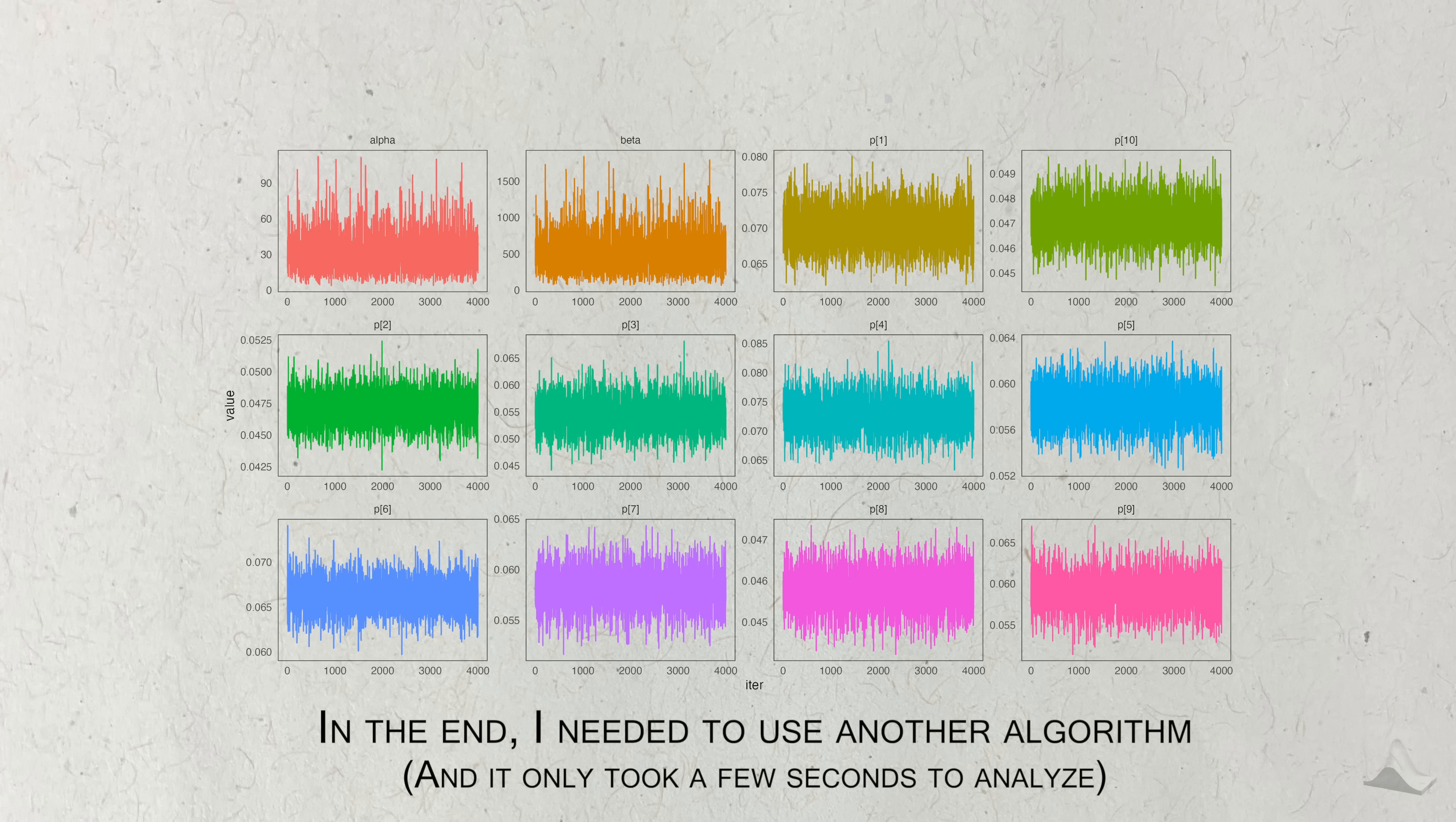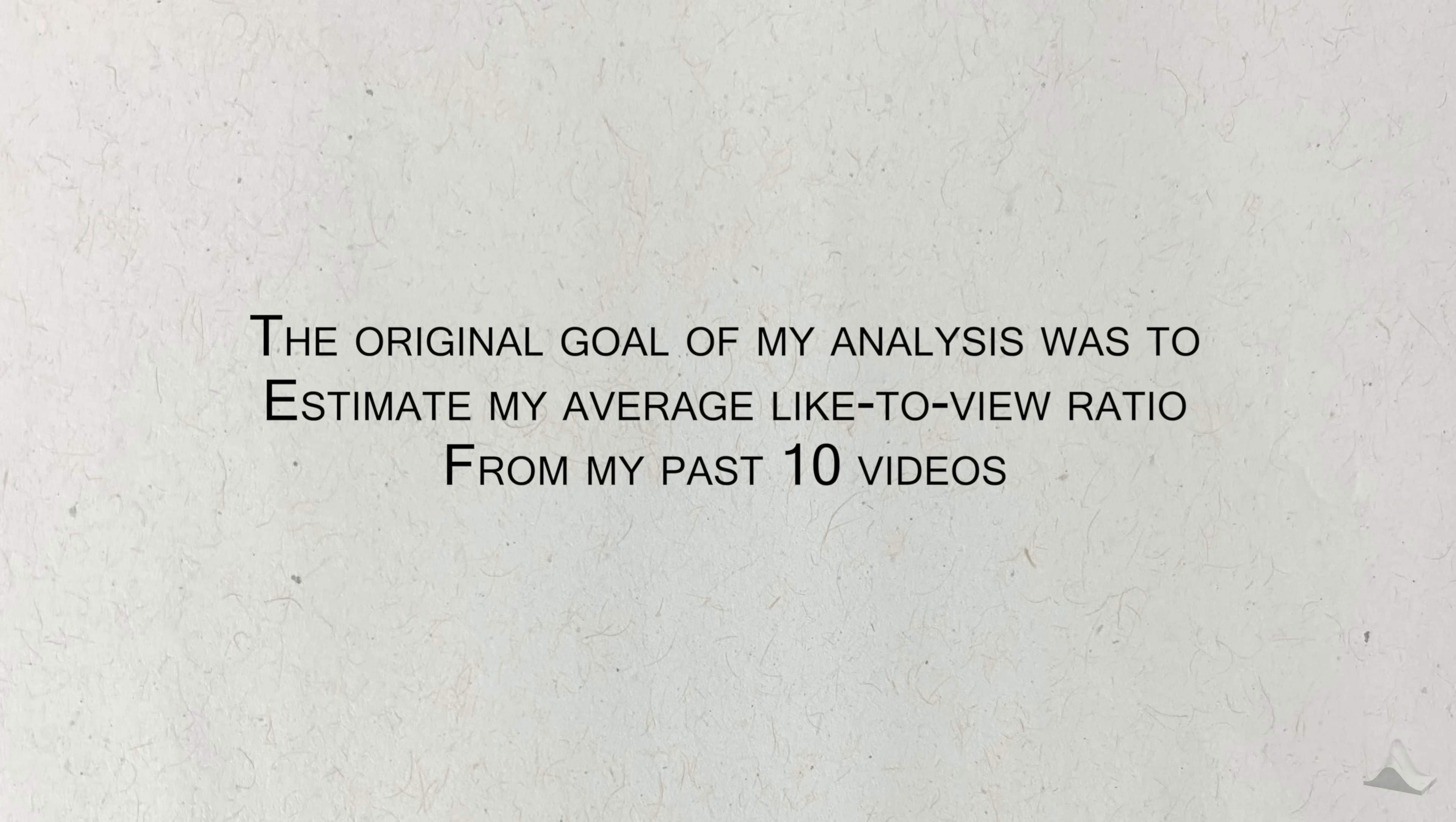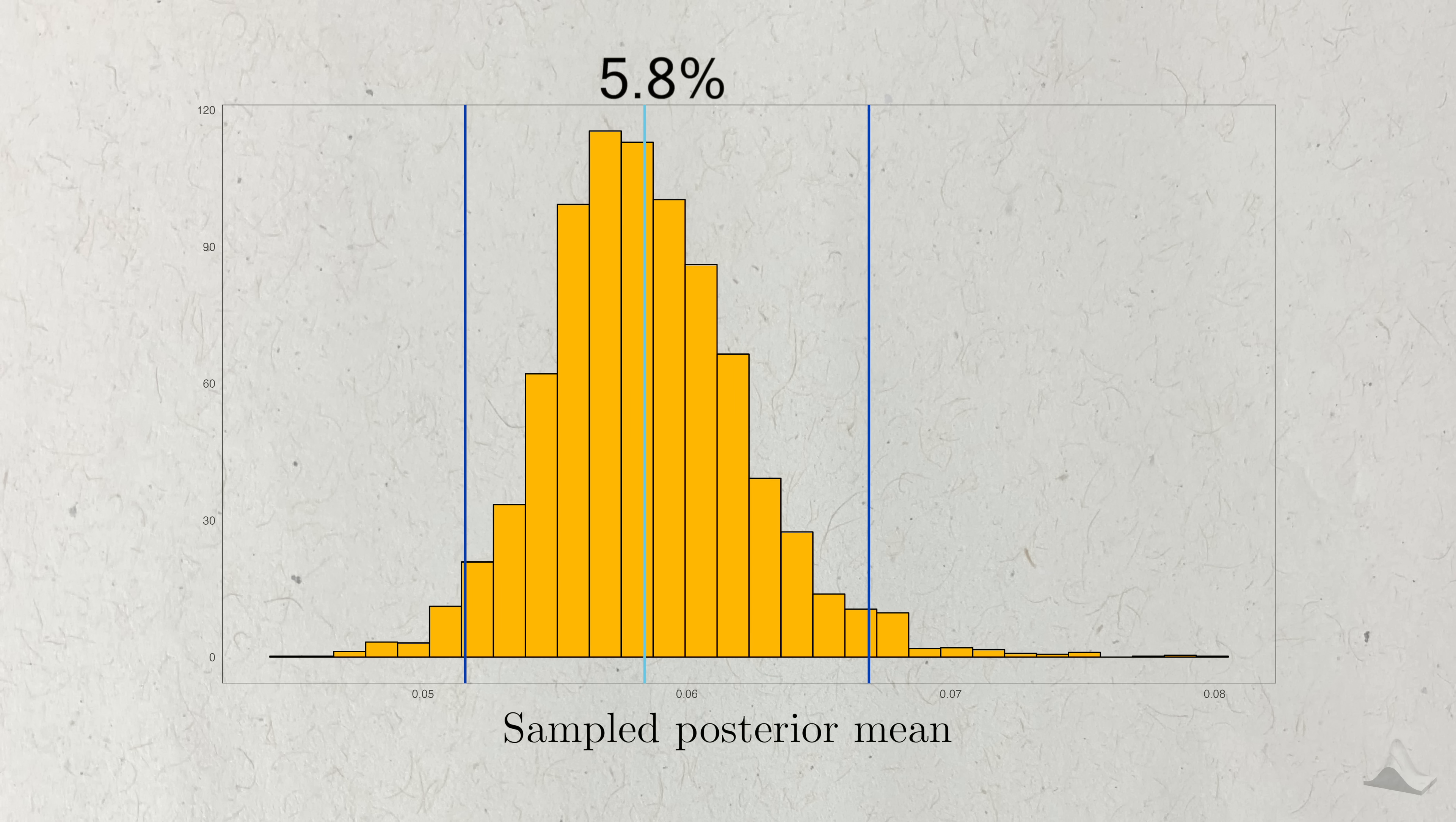I cheated and used another algorithm to analyze my results. I used Stan, which uses the Nuts algorithm. The goal of my analysis was to analyze the average like-to-view ratio of my past 10 videos. To calculate this, I can get the posterior distribution of the sample mean by taking the ratio of the alpha parameter divided by alpha plus beta. This is defined for the beta distribution. Looking at the posterior distribution, the average like-to-view ratio is 5.8%, with the 95% credible interval between 5.1% and 6.6%. I wanted to mention this because I thought it really highlighted not just the highs of the Metropolis algorithm, but also the lows.